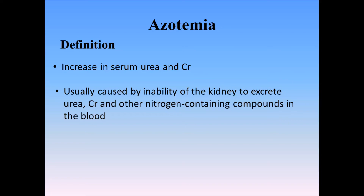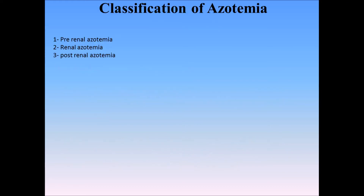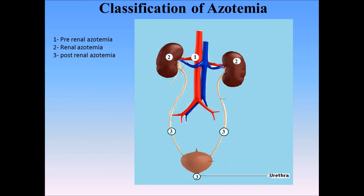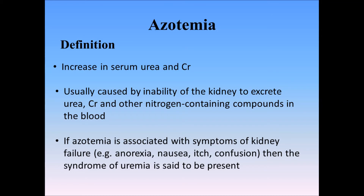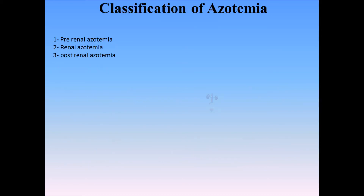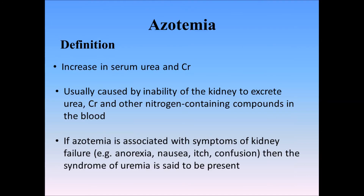There are three kinds of azotemia: pre-renal, renal, and post-renal. Depending on the cause, there may be a few symptoms such as fatigue, sleepiness, pale skin, thirst, edema, and flapping tremor.